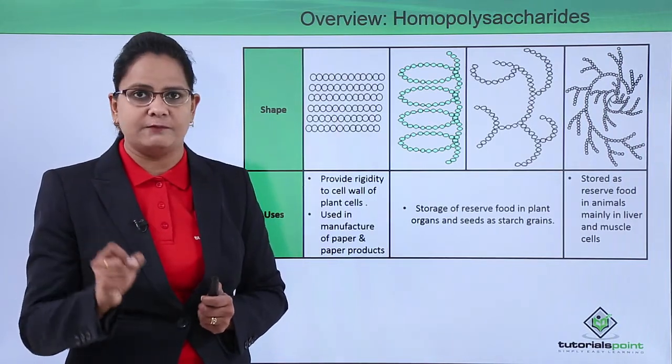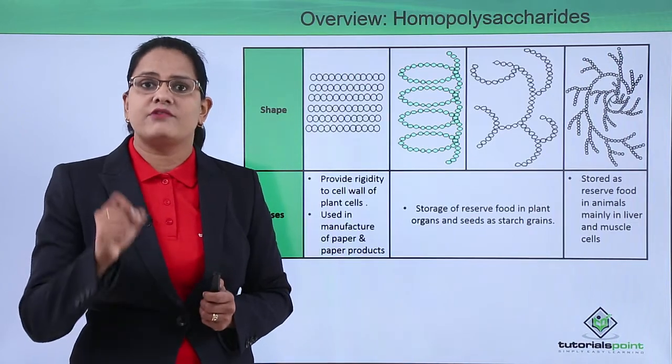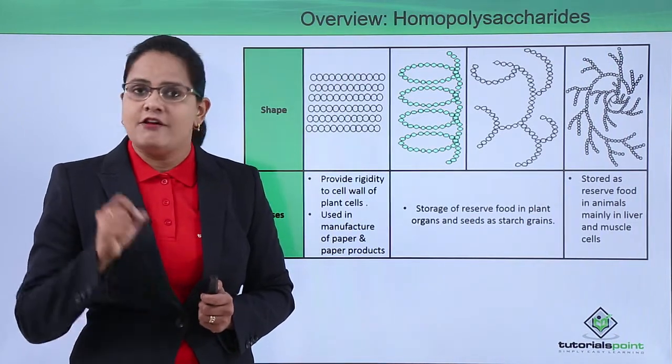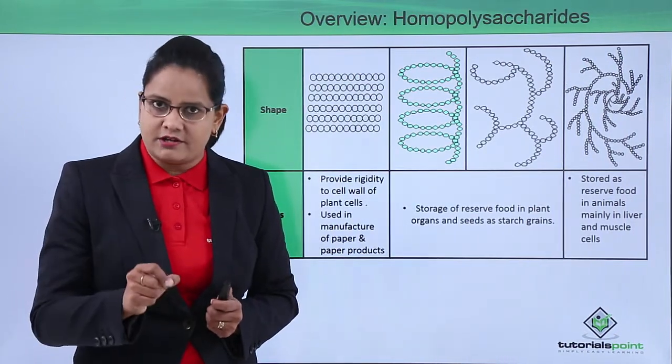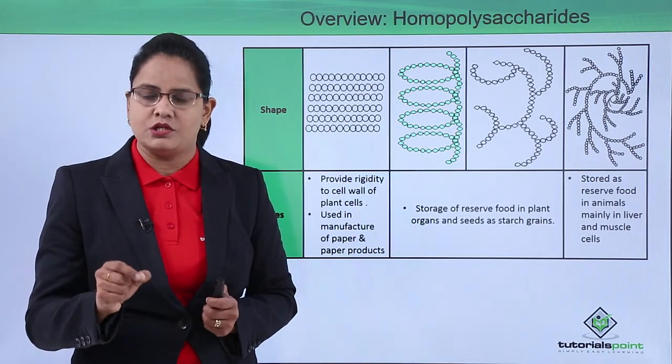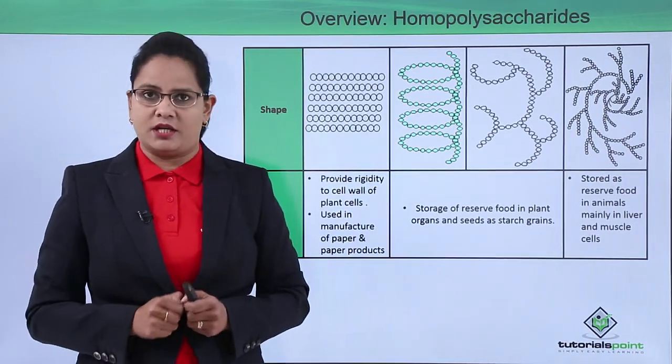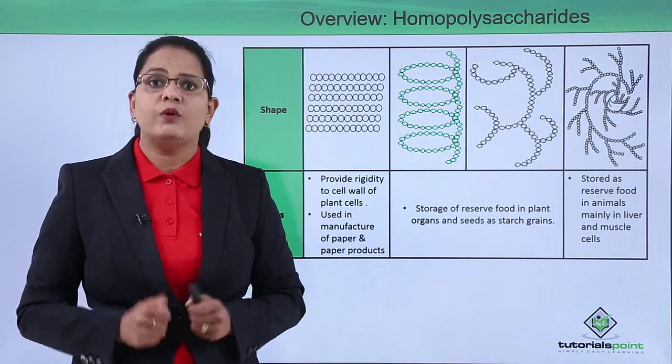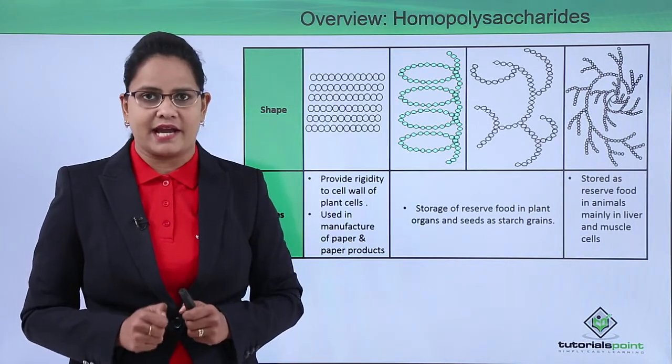Glycogen is the reserve food for animals. Where is it stored? In liver as well as in the muscle tissues. So this was all about homopolysaccharides. In the next video we will learn about heteropolysaccharides. Thank you.